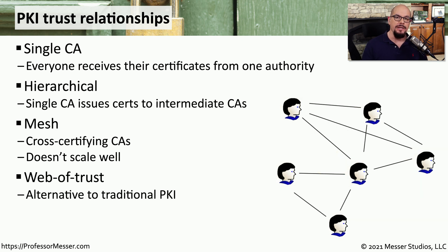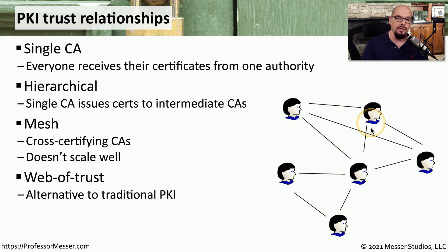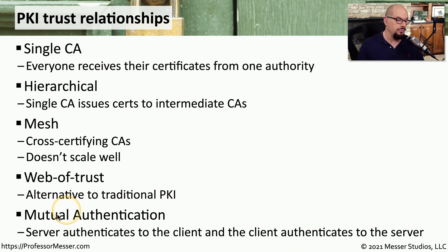If you've created a certificate in PGP, you'll notice there is no certificate authority — PGP was created as a web of trust. In a web of trust, you sign certificates of people you know, and those people sign certificates of people they know. So if you see a certificate from someone you don't know, but it has been signed by someone you do know, there is a level of trust you can associate with it. Another PKI trust relationship is mutual authentication, where you validate that the server you're communicating with is trusted, and the server also confirms that the client is trusted — so both sides of the conversation can trust each other.